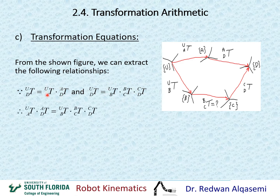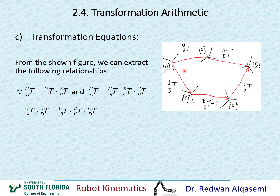If we extract these two equations: this is defining T_DU using the upper route, and this is T_DU using the lower route. That means this multiplication equals this multiplication right here. So T_AU times T_DA equals T_BU times T_CB times T_DC. These equalities apply and are correct based on what's defined in the figure.